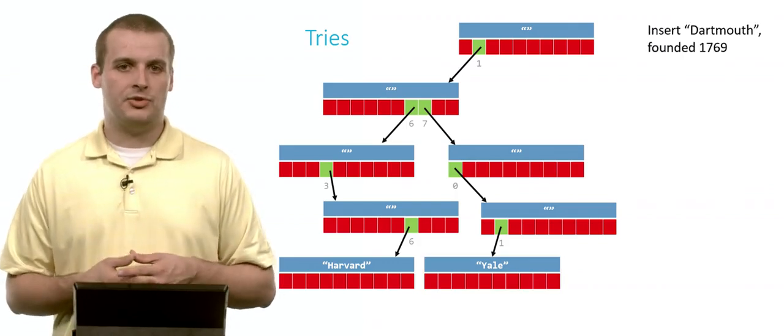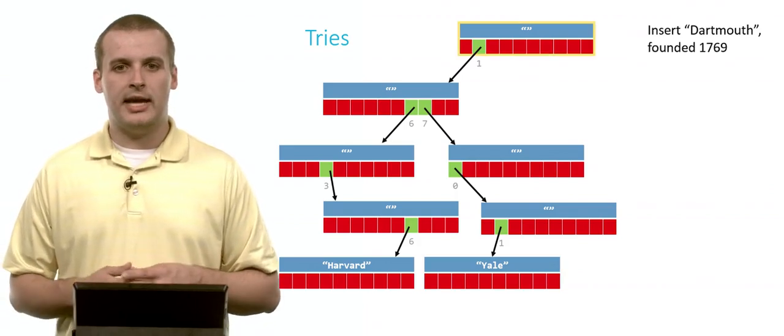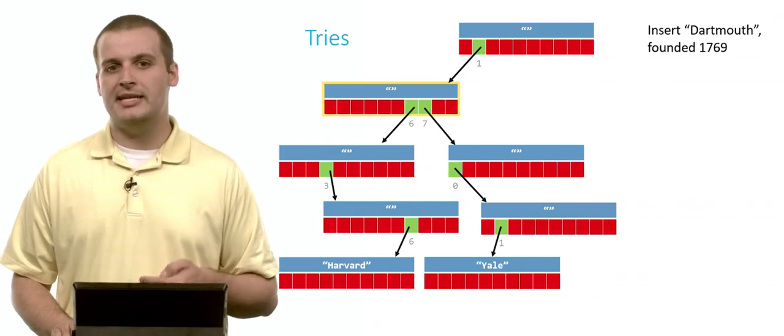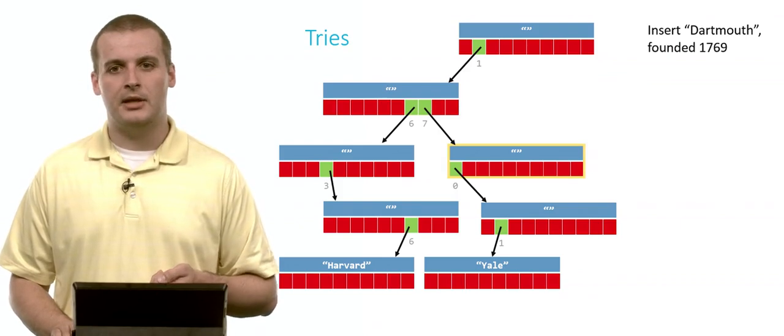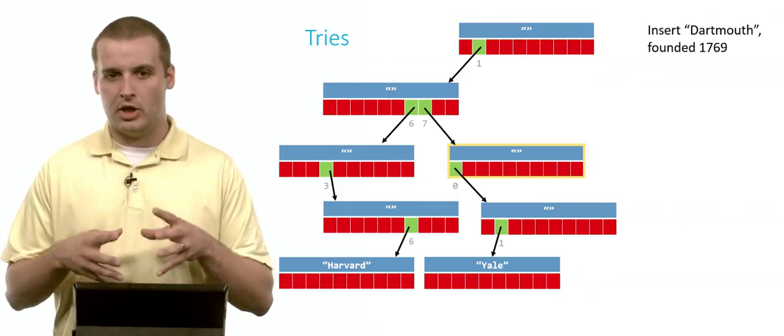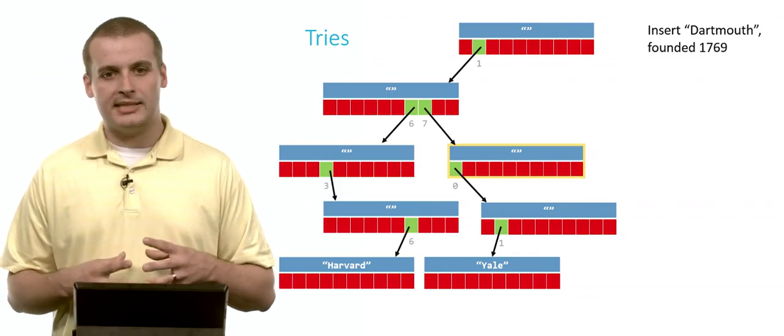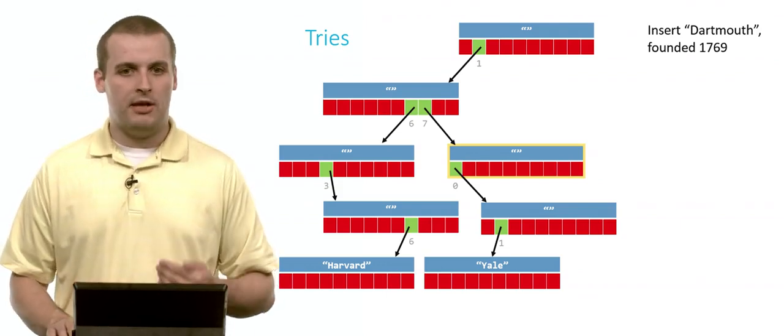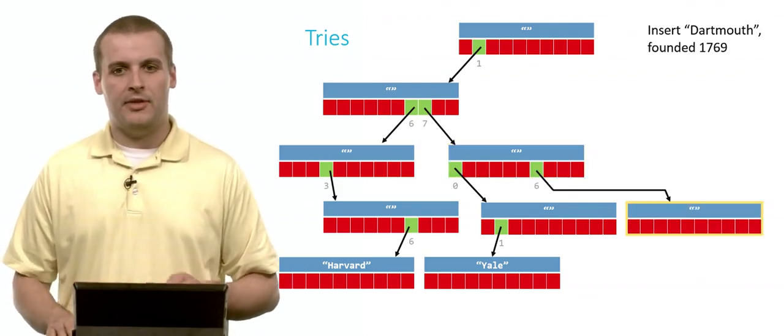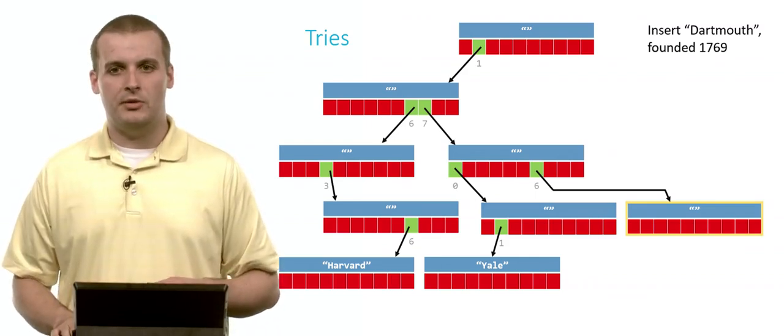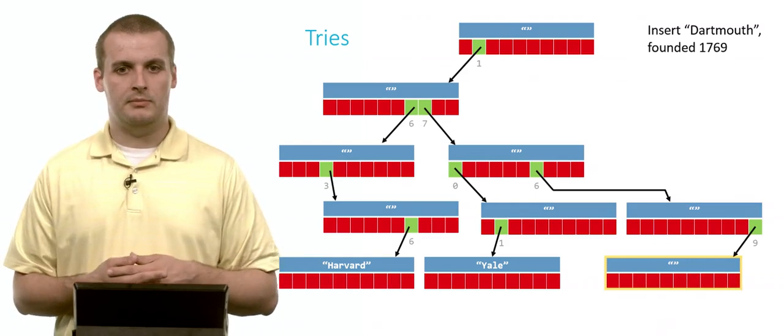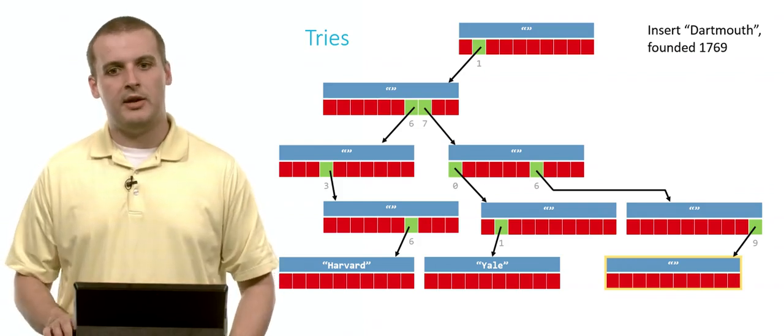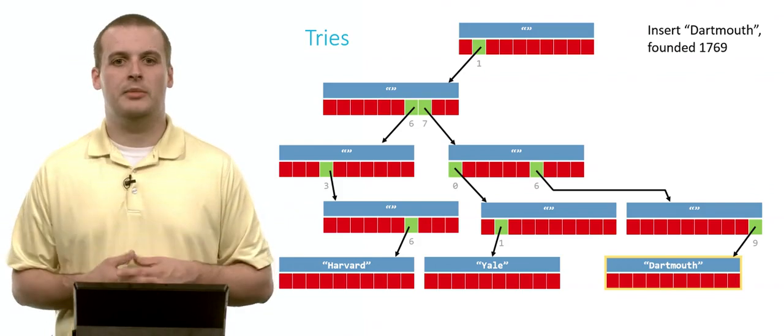Let's do one more. Let's insert Dartmouth into this trie, which is founded in 1769. Start at the root again. My first digit of my key is one. I can safely move down that path. It already exists. The next digit of my key is seven. I can safely move down that path. My next digit is six. From where I currently am in yellow there in that middle node, six is currently locked off. If I want to go down that path, I have to build it myself. So I'll malloc a new node and have six point there. And then I'm blazing new trails here, so I malloc a new node so that from that node, path number nine. And then now if I travel 1769 and I look down, I can write Dartmouth. And I've inserted Dartmouth into the trie.